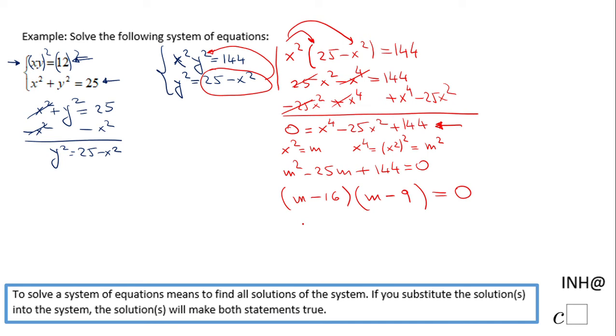Now we have the factor form. We can solve for m and we get for the first one m equals 16, and for the second factor m equals 9.